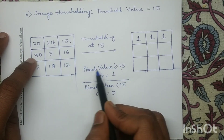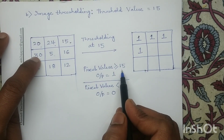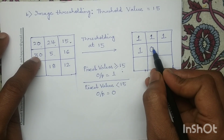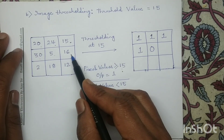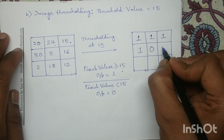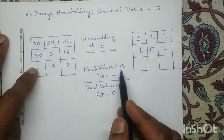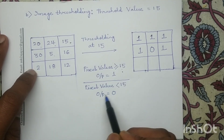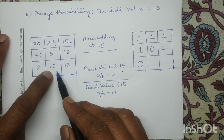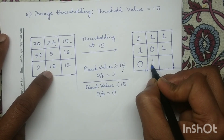Pixel value 30 also satisfies this condition, so I will write 1. Pixel value 5 does not satisfy the condition — it is not greater than or equal to 15 — so in the output image I assign intensity level 0. For pixel value 16, it satisfies the condition — greater than or equal to 15 — so I write 1. Pixel value 2 does not satisfy the condition since it is less than 15, so in the output image I assign intensity level 0. Similarly for pixel value 18, it satisfies the condition — greater than or equal to 15 — so I write 1.